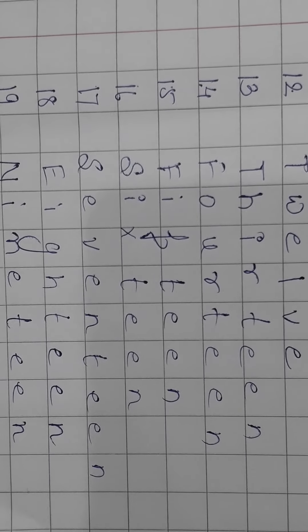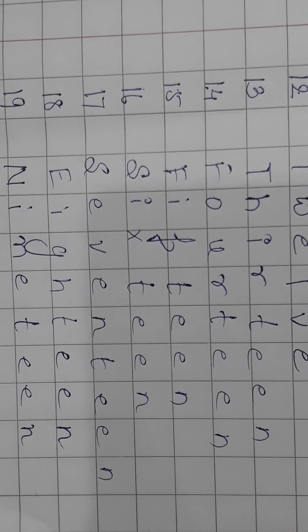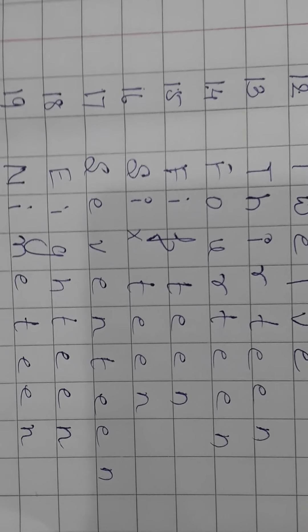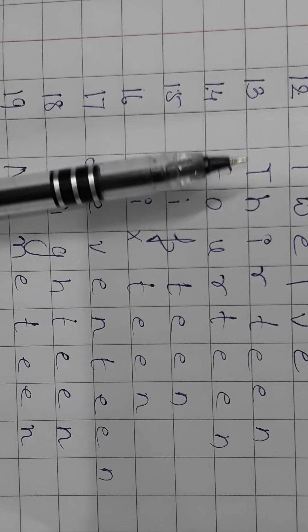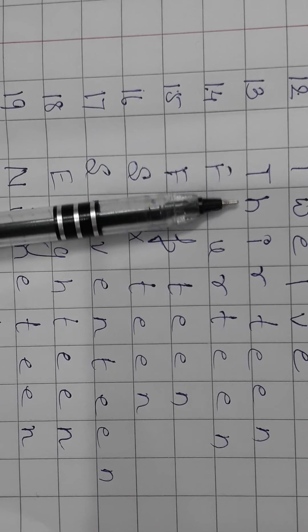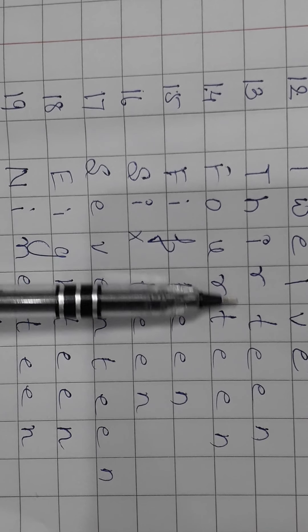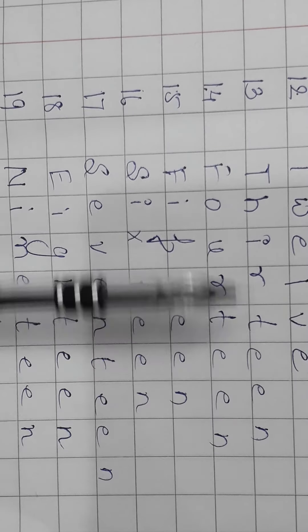Now let's clap for ourselves that we have done till 12. Clap for ourselves. Now let's move on to 13 — T, H, I, R, T, W, E, N. 13.